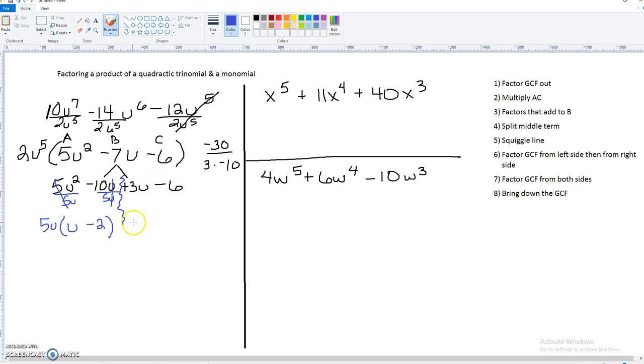Now on the right side, we can take a 3 out. So of course, the 3 is canceled. We're left with u, and negative 6 divided by 3 is negative 2.